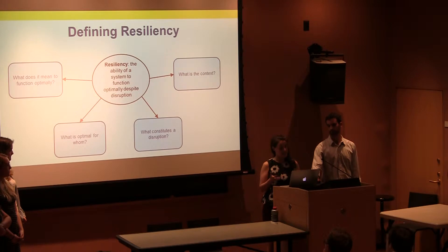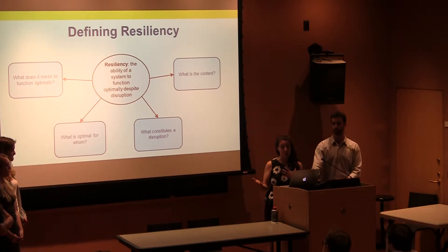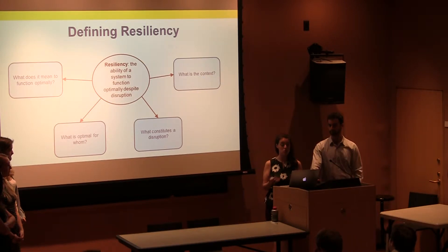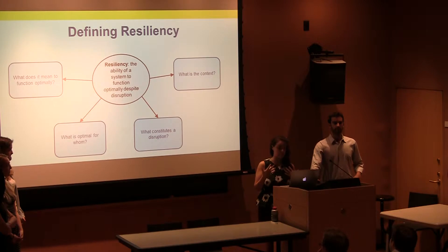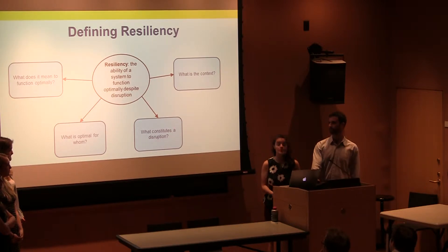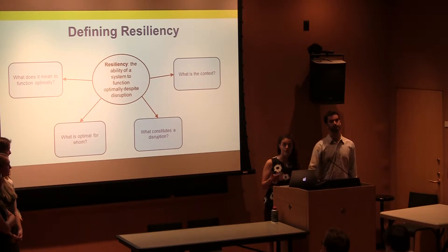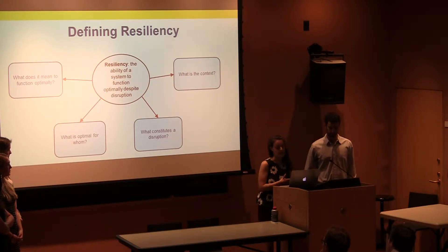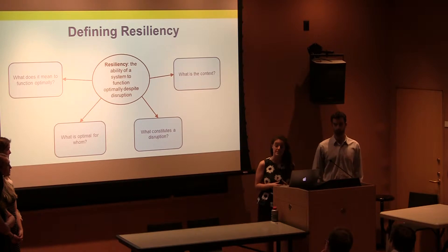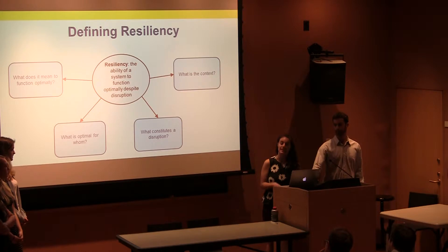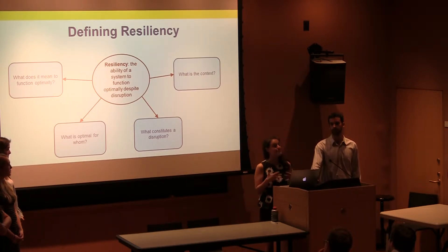What does it mean to function optimally — is that the best way possible, or just enough to get by? What is optimal for whom? Who are the stakeholders involved in creating resiliency? What constitutes a disruption? Literature has focused primarily on disasters like flooding and storms, but there are other disruptions such as heatwaves or changes in a community's social fabric that can also impact resiliency. Finally, it's important to consider the context of the system you're trying to make resilient, such as its historical context.